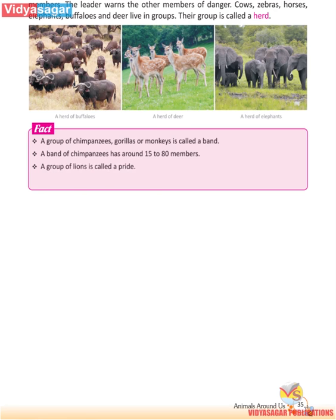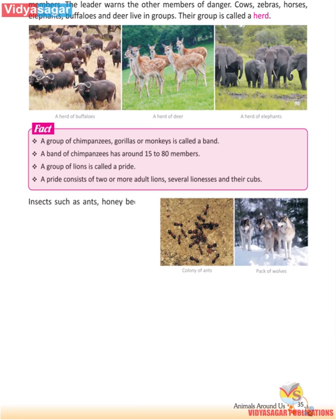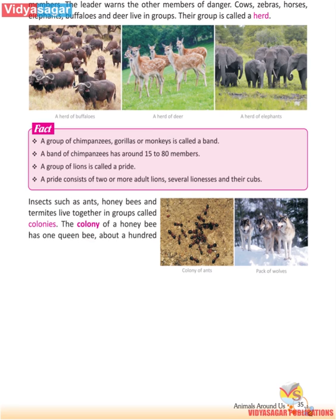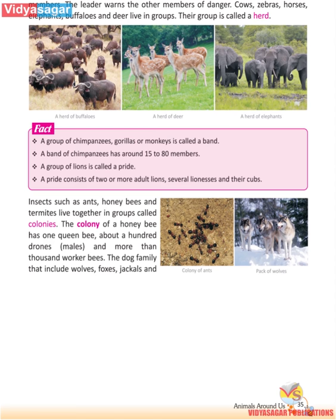A group of lions is called a pride. A pride consists of two or more adult lions, several lionesses and their cubs. Insects such as ants, honeybees and termites live together in groups called colonies. The colony of a honeybee has one queen bee, about a hundred drones, and more than a thousand worker bees. The dog family, which includes wolves, foxes, jackals and coyotes, moves in packs.